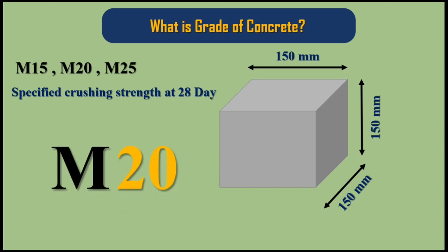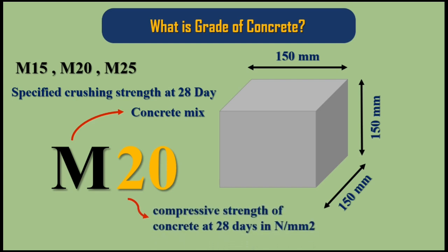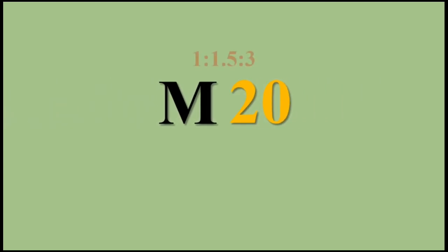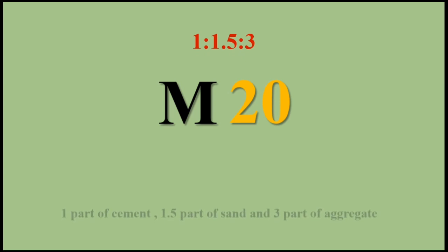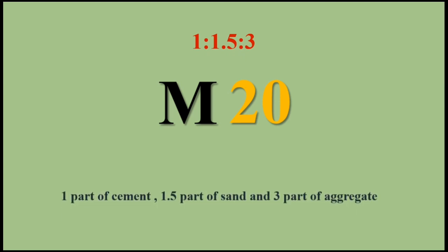Grades of concrete are indicated by the letter M, which means mix, followed by a number that represents the compressive strength of that concrete at 28 days in N/mm². For example, M20 represents a mix ratio of 1 part cement, 1.5 parts sand, and 3 parts aggregate.